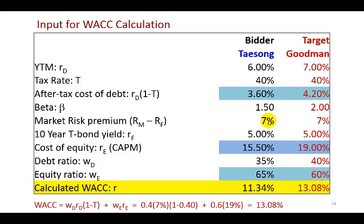The beta of the target firm is 2, meaning this stock is twice as volatile as the market. The risk premium to use — the difference between the market return and the risk-free interest rate — is 7%. For the capital asset pricing model (CAPM), we use a risk-free interest rate of 5%, which is the estimated yield to maturity on 10-year treasury bonds.